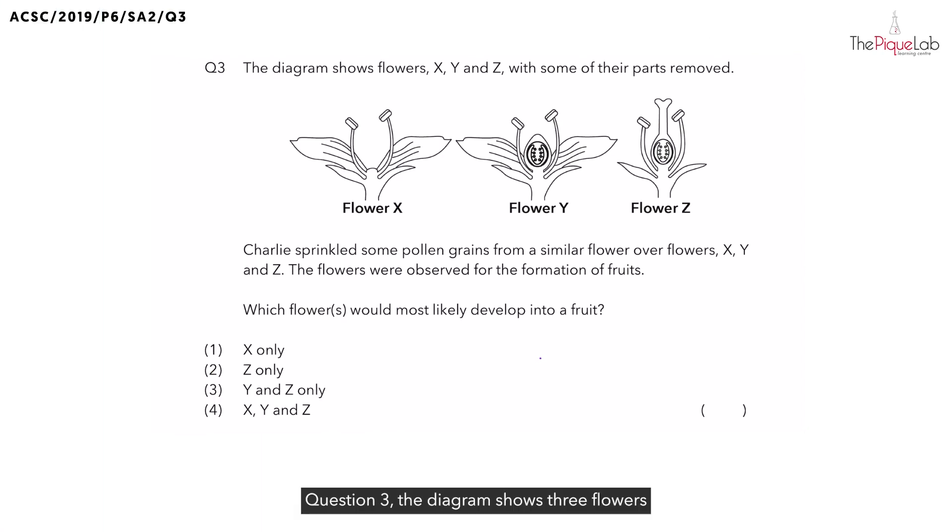Question 3. The diagram shows 3 flowers with some of their parts removed, and Charlie sprinkled some pollen grains from a similar flower over these 3 flowers. The question is asking which flower would most likely develop to become a fruit.